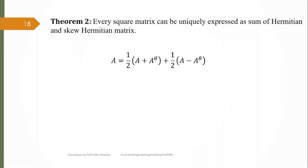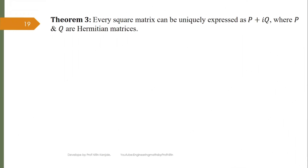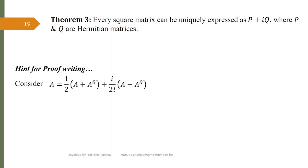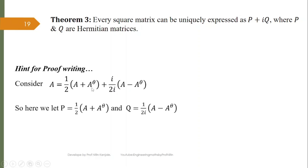Theorem 3 states that every square matrix can be uniquely expressed as P + iQ where P and Q are both Hermitian matrices. For this, write A = (1/2)(A + A^θ) + i · (1/2i)(A - A^θ). We take P = (1/2)(A + A^θ) and Q = (1/2i)(A - A^θ). One can verify that P^θ = P and Q^θ = Q, so both P and Q are Hermitian, and A = P + iQ. Uniqueness follows similarly to Theorem 1.